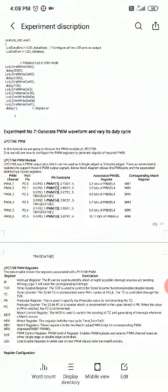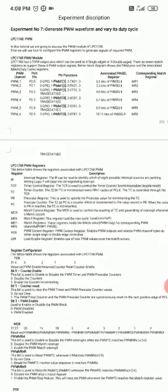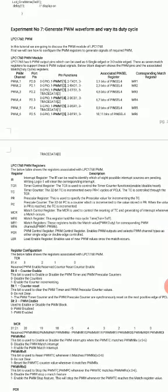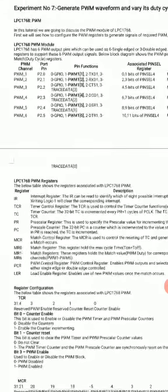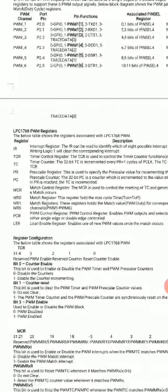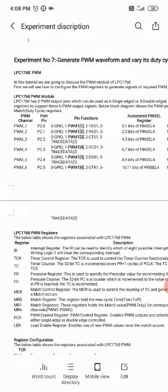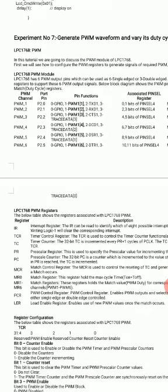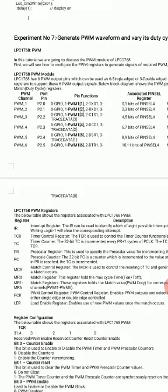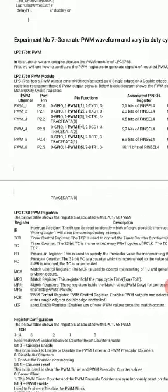Similar to DAC, there are many registers defined for the PWM signal: IR (Interrupt Register), TCR (Timer Control Register), TC (Timer Counter), PR (Prescalar Register), PC (Prescalar Counter), MCR (Match Control Register), MR0 to MR6 (Match Registers), PCR, and LER. The IR register identifies which of the eight interrupt sources are pending; writing 1 to a bit clears the corresponding interrupt. We will not be using the IR register in this program.